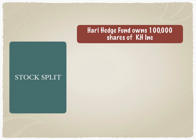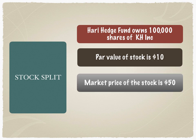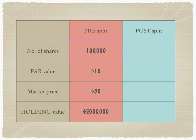Let's go back to my favorite example — Hurry Hedge Fund. It owns about a hundred thousand shares of KH Inc. The par value of the stock is ten dollars and the market price of the stock is fifty dollars. The holding value is five million dollars — that is a hundred thousand shares multiplied by fifty dollars.